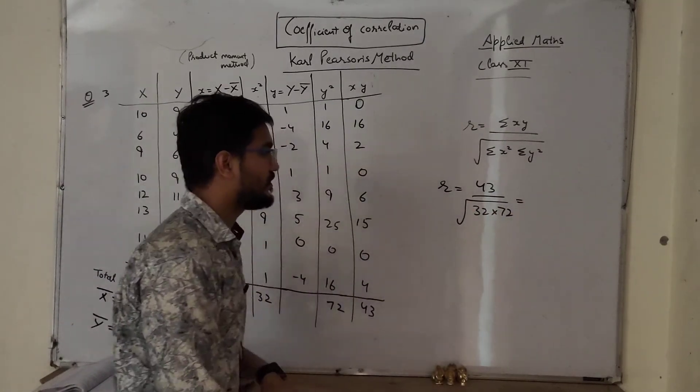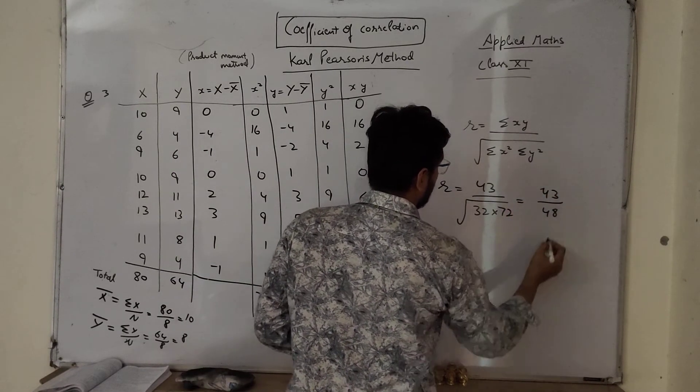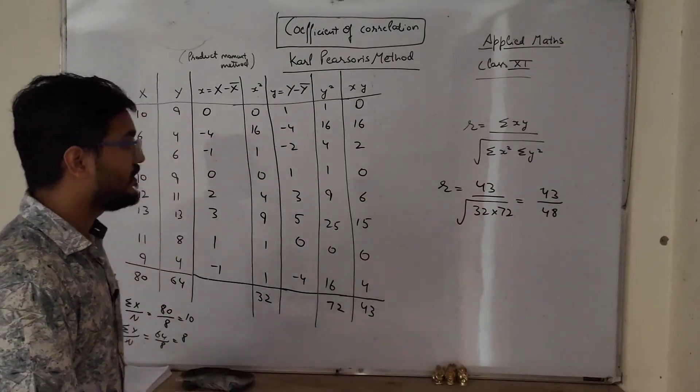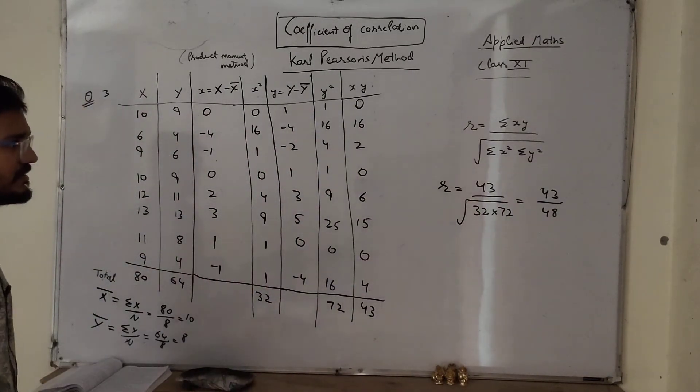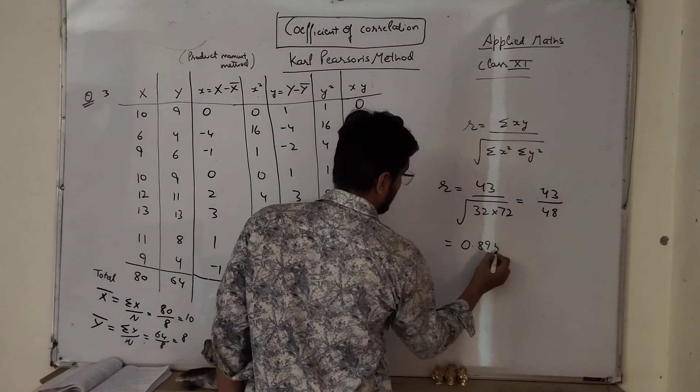So which equals 43 upon, this is 48. When you solve it you will get 48. So when you divide it you will get 0.895. So r equals 0.895.